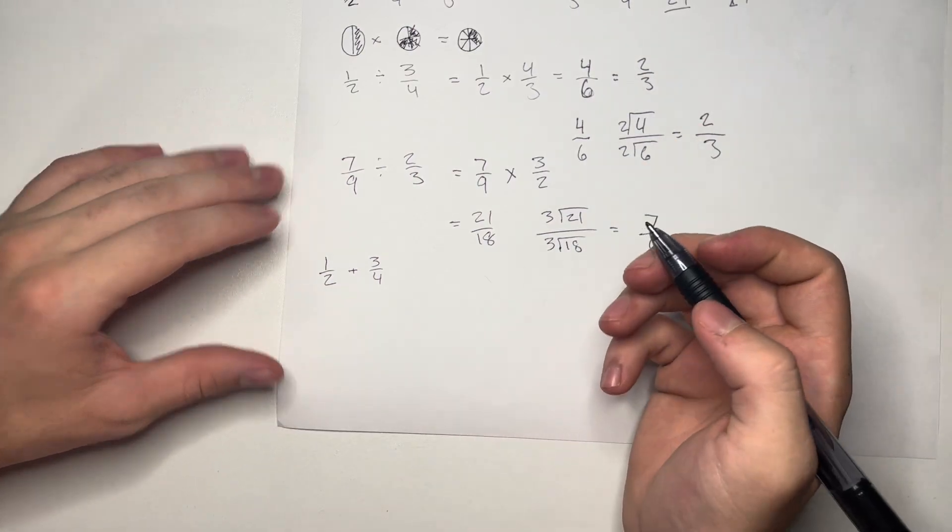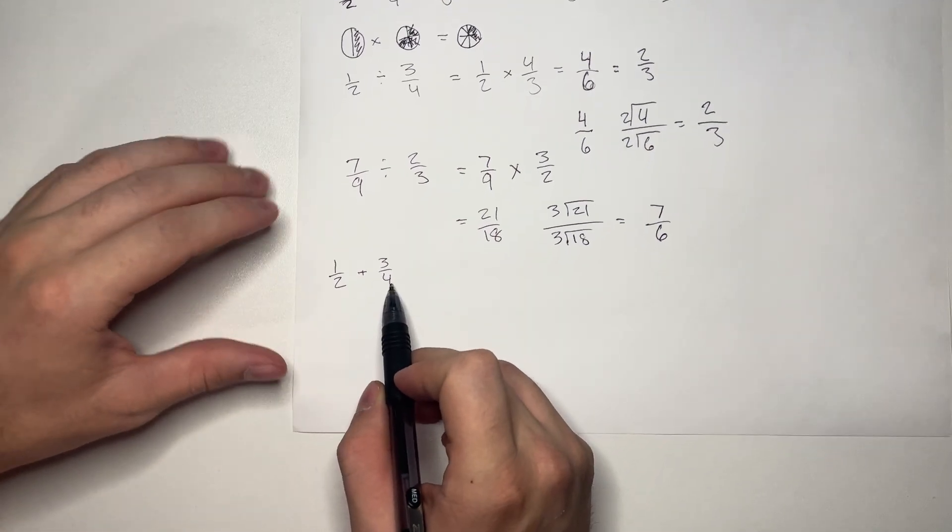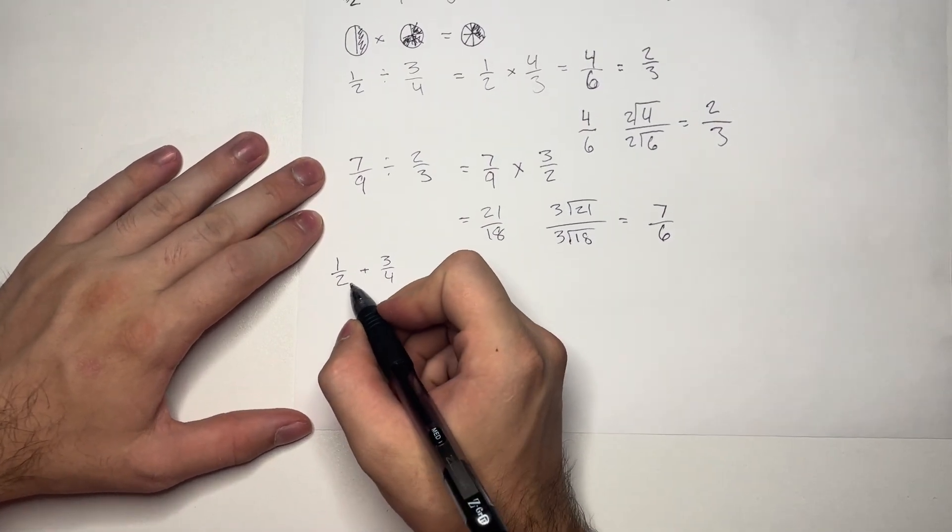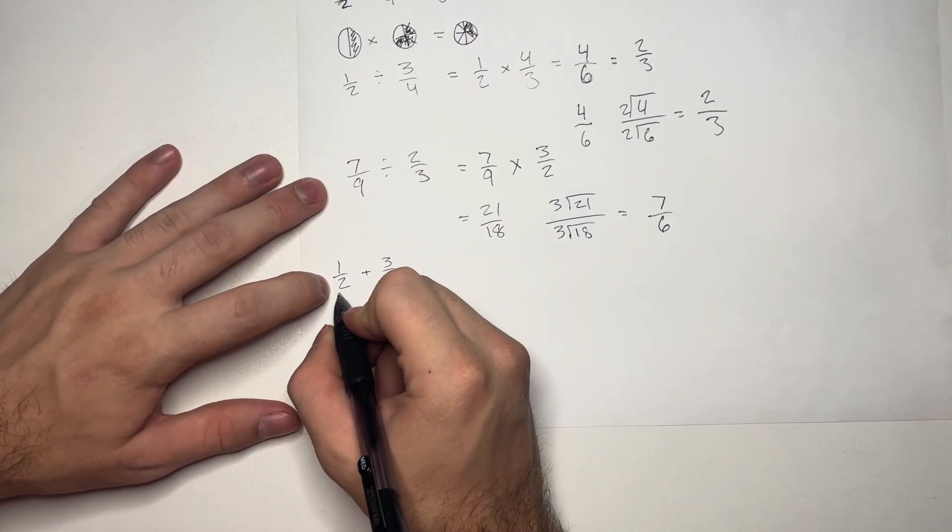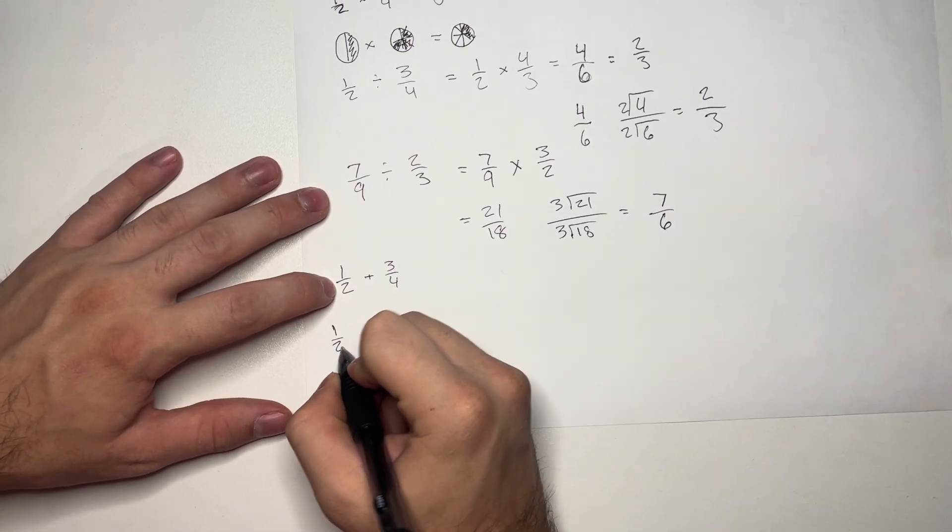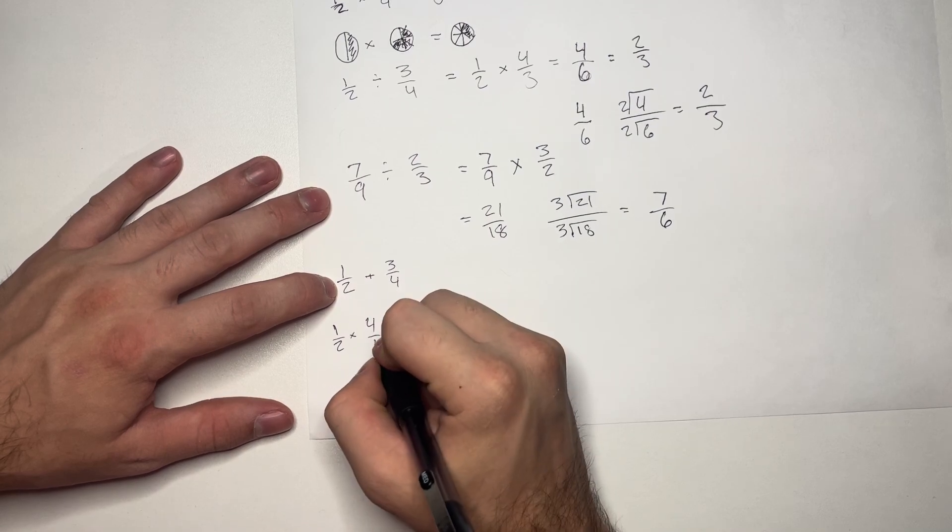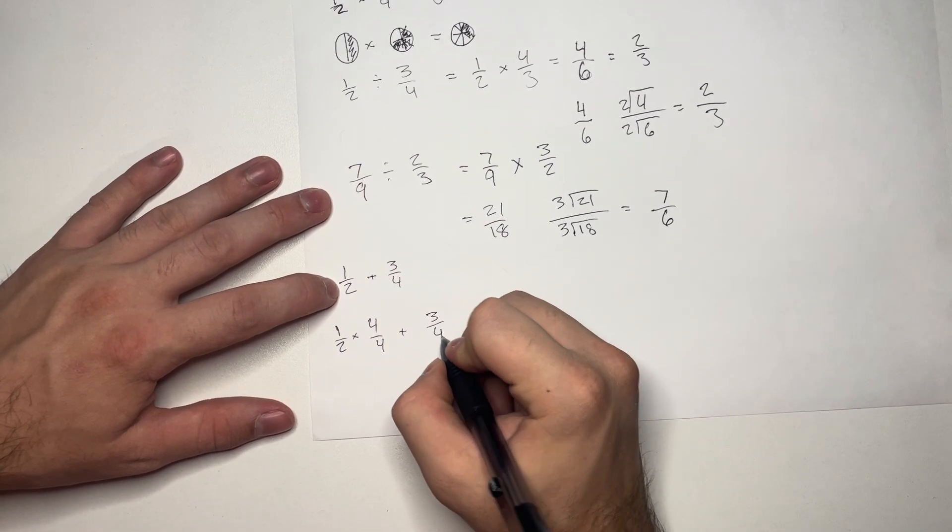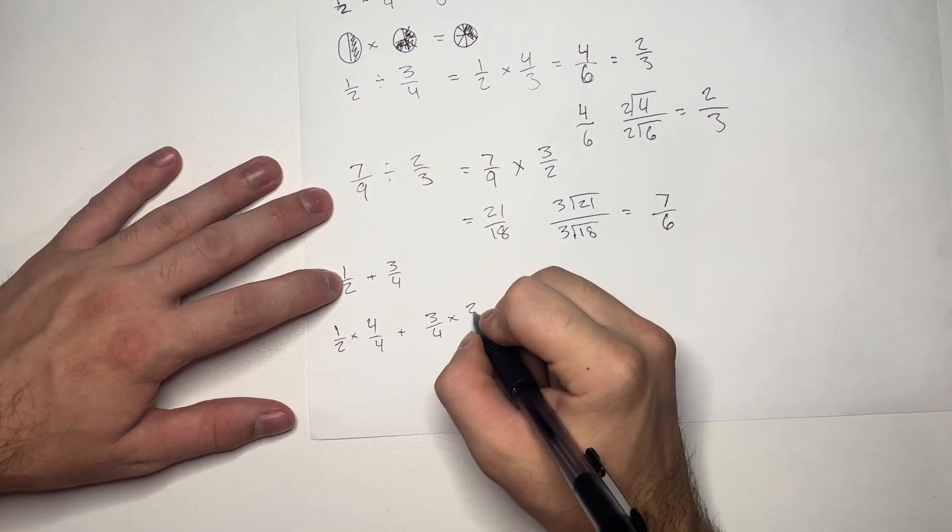And so, one way to do that is to multiply these two numbers. And I will go ahead and show you that. So, 1 half. 2 times 4 is 8. So, we're going to do 1 half times 4 over 4 plus 3 over 4 times 2 over 2.